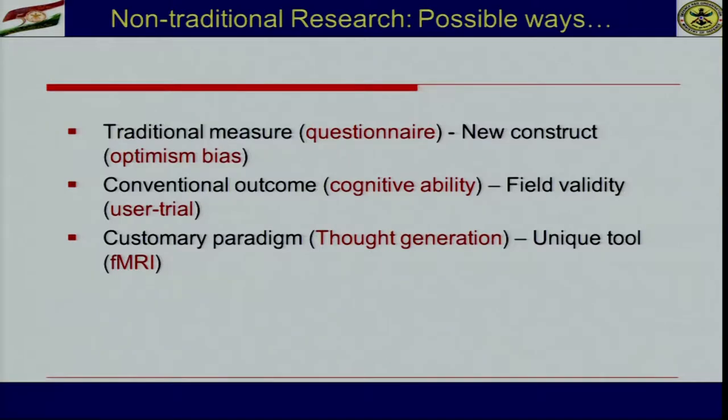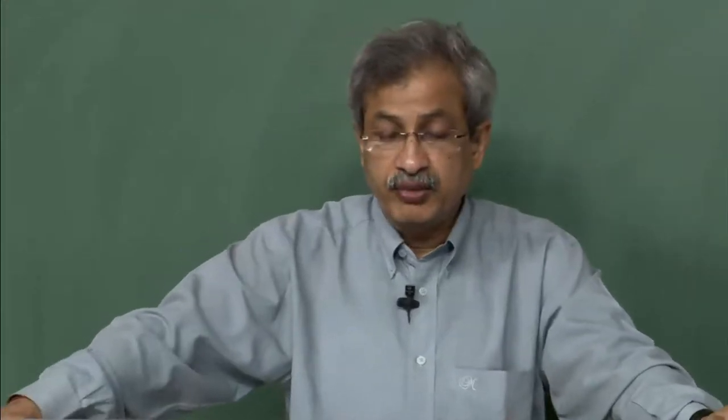There are thought generation capabilities at a design level that are possible, and we can test them with a unique tool. For example, for sequential processing, what kind of activation takes place in which part of the brain; for parallel processing, what kind of activation takes place and in which part. Such unique tools are available today to test our customary paradigms. We have several known variables like belief — belief system is very important in psychological science, but we do not know whether there is a biology behind belief or not.